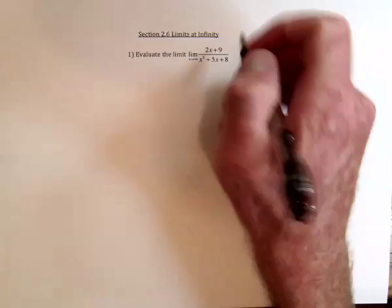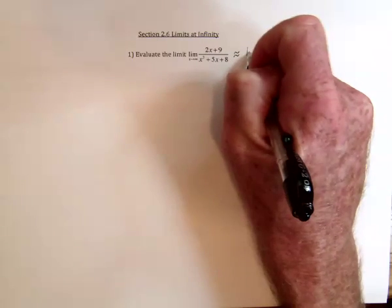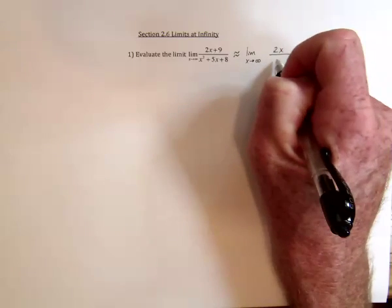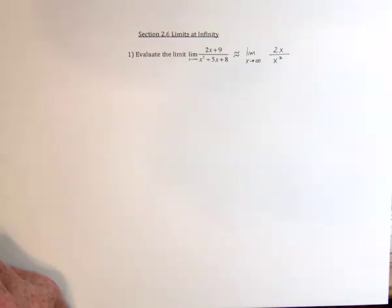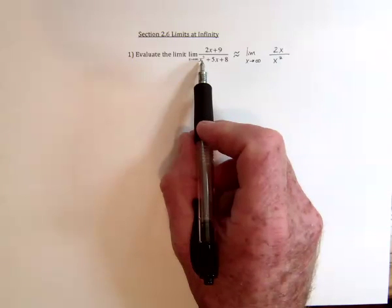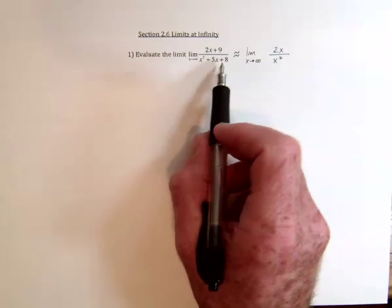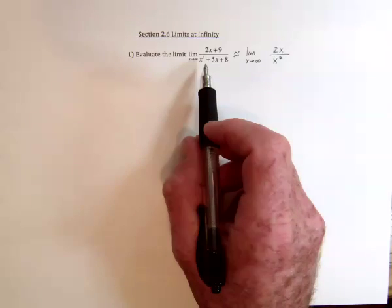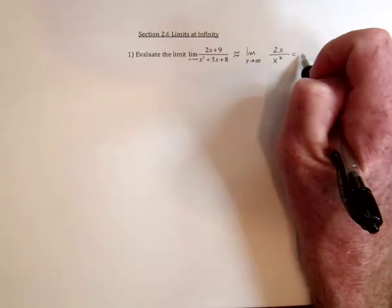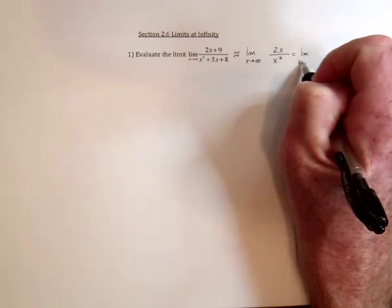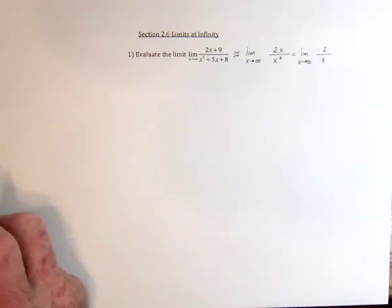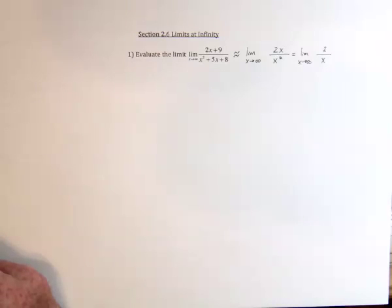So you can say this is pretty much going to be the same as the limit as x approaches infinity using just the leading term and the leading term. Infinity squared is much more powerful than adding 8 or even adding 5 times infinity, so use the most powerful term, which is x squared. Then you can do some algebra and cancel x's, giving you the limit as x approaches infinity of 2 divided by x. And 2 divided by infinity is 0.